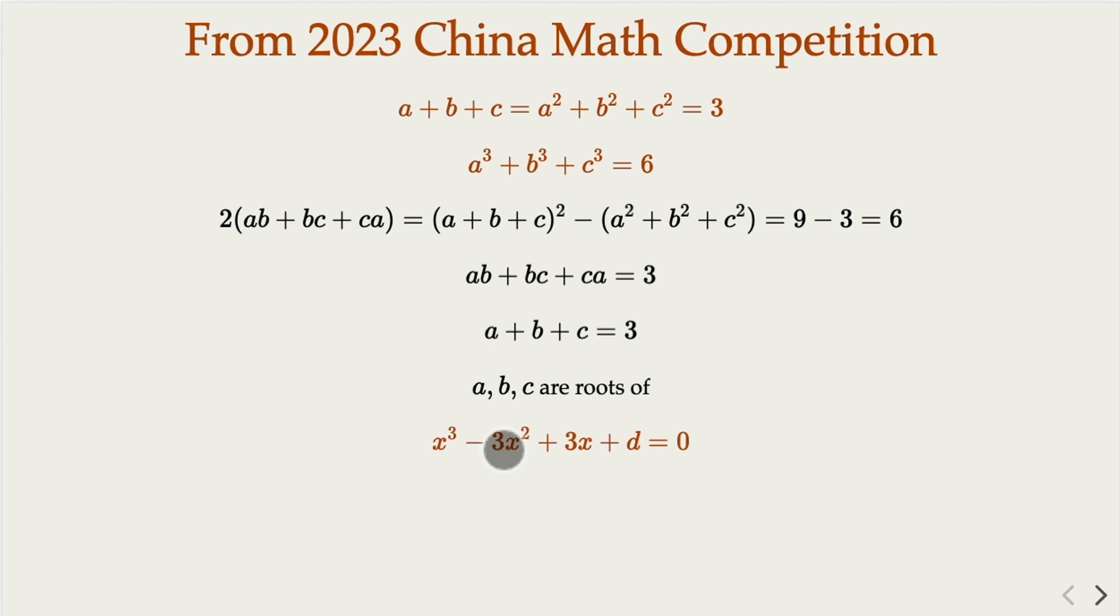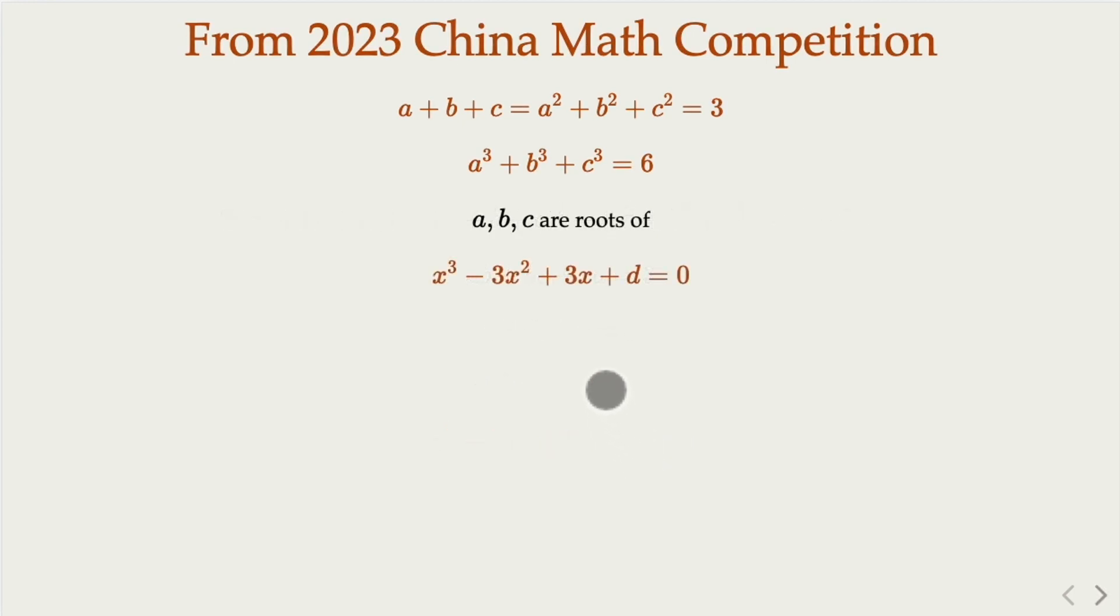So check it out with Vieta formula. With this expression here, the sum of the roots is going to be 3, and the pairwise product sum is going to be 3. And this one is going to be A times B times C. We don't know the value, but let's figure it out, all right?